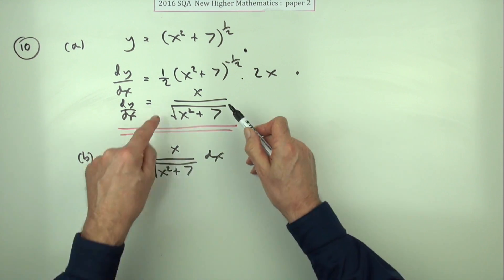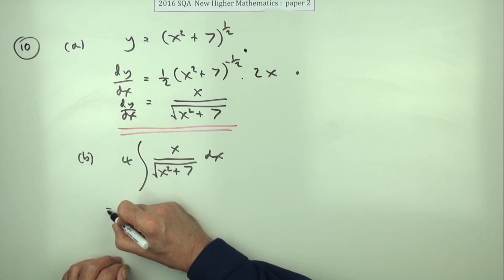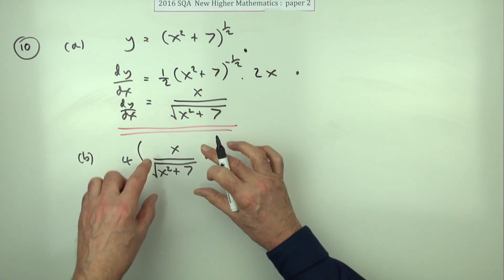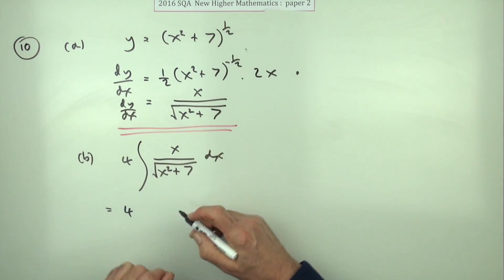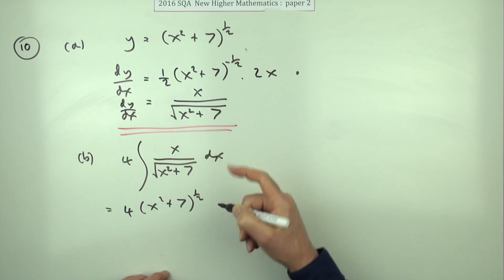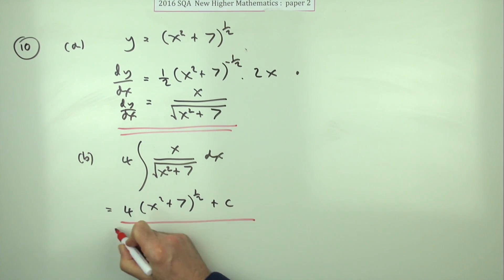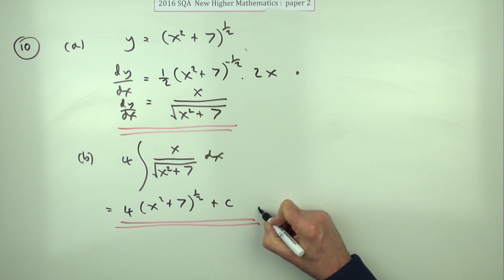What's left inside is just that. So the answer to that would just be four times the original one, four times x squared plus seven to the power of half, because that's the way it was written, plus c. And that was the mark.